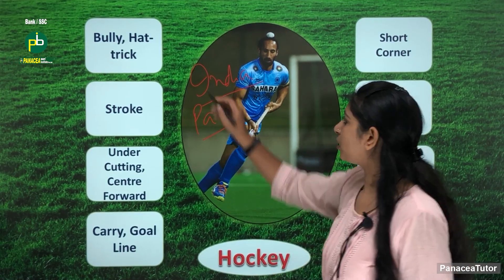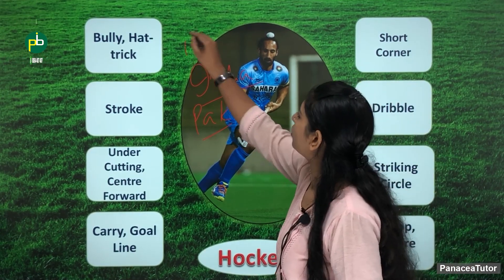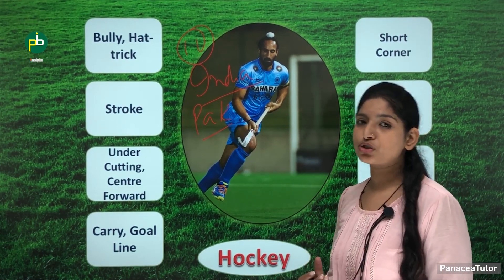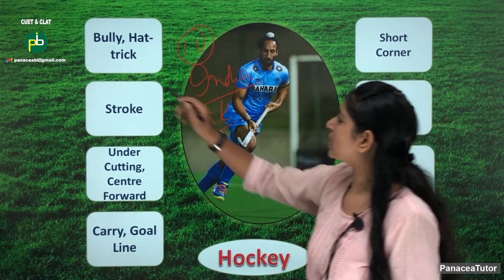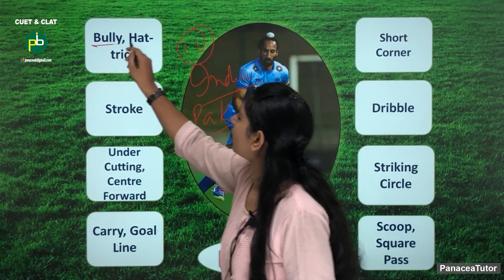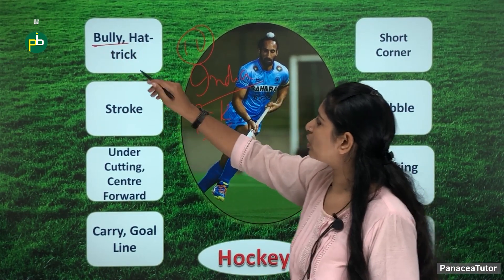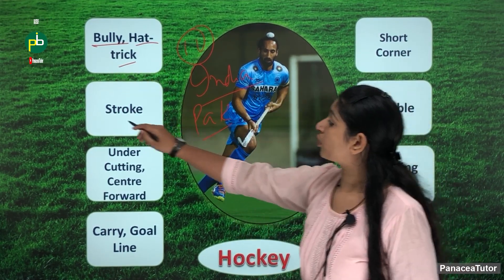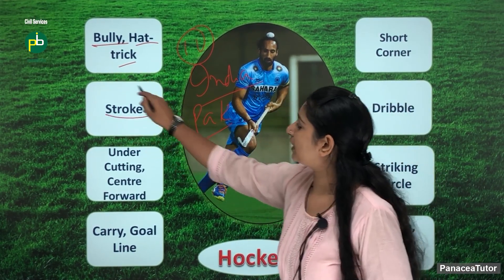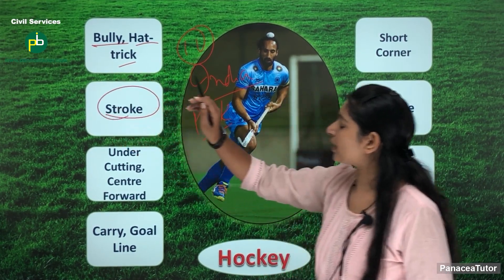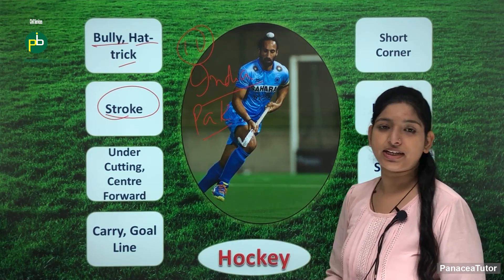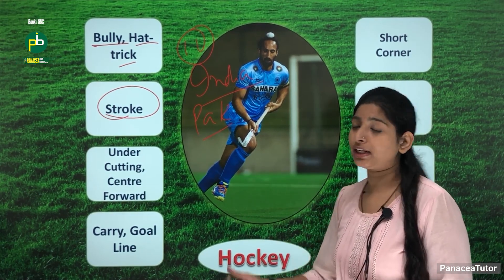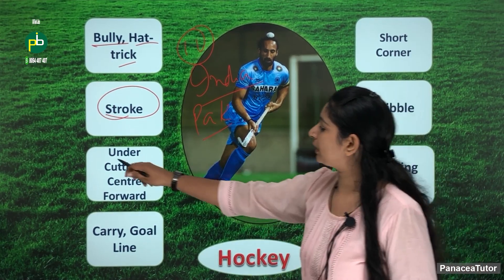How many players are in the team? In one team, you have 11 players. There are some other terms — bully and hat-trick. The term stroke is associated with hockey; stroke means the way to hit a ball.